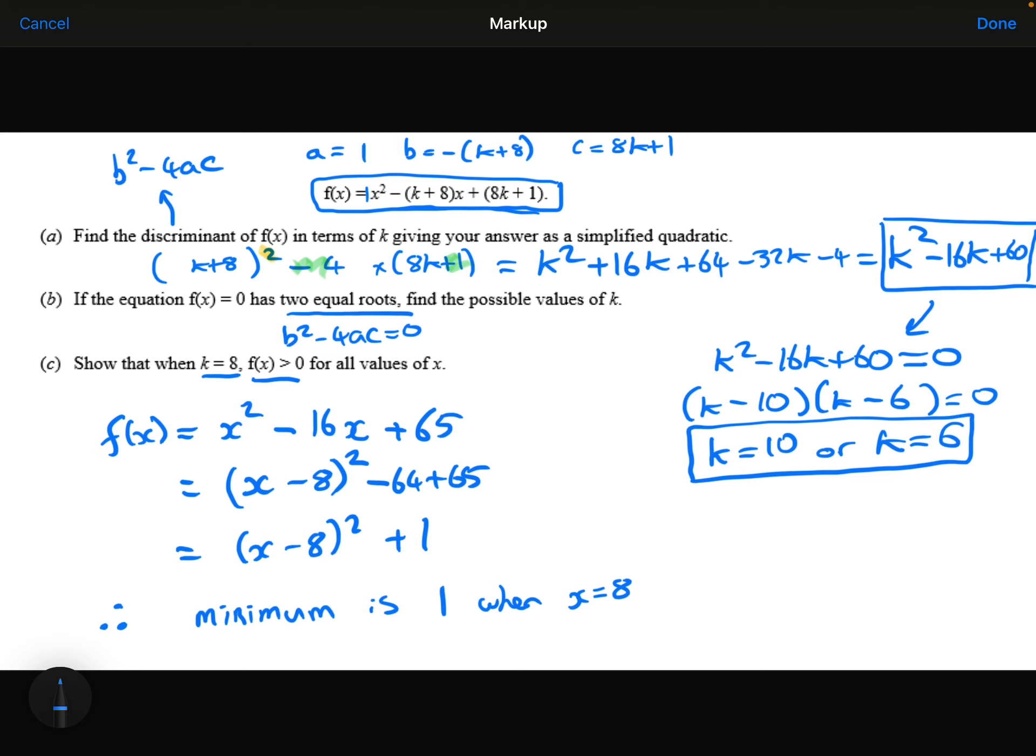So this is telling me that the minimum is 1 when x equals 8. And if the minimum is 1, that means it always has to be greater than or equal to 1, so therefore it's always going to be positive.